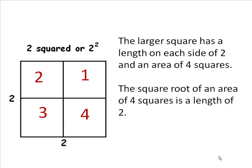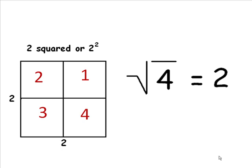The square root of an area, or 4 squares, is a length of 2. The square root of 4 is 2. Square root 4 equals 2.